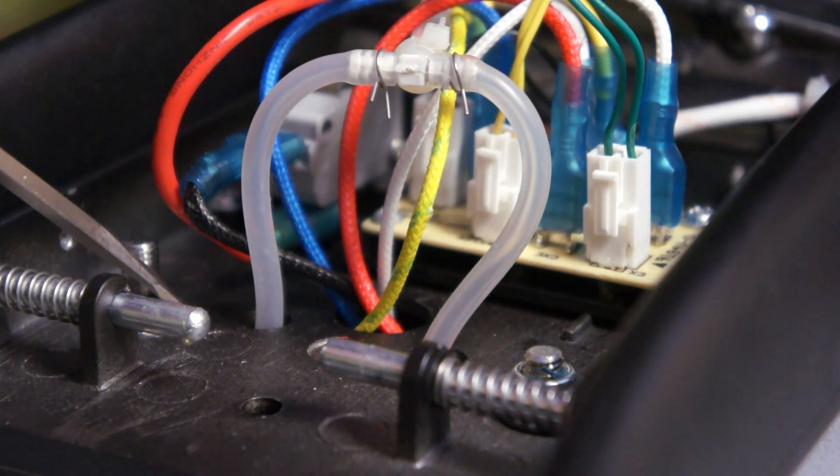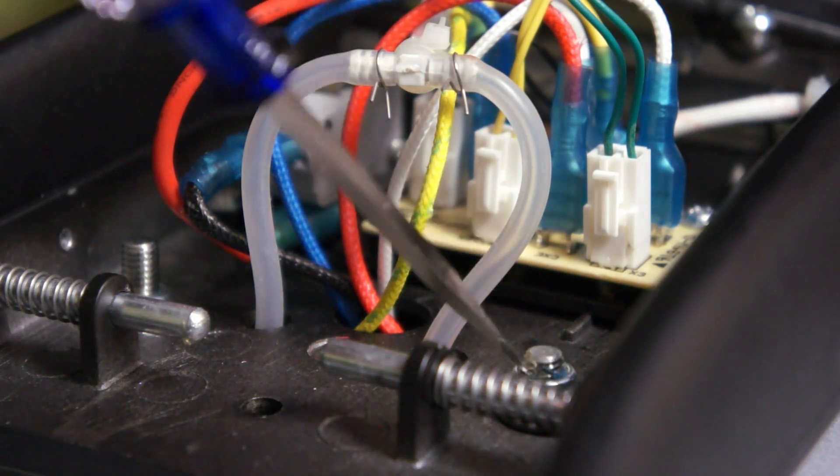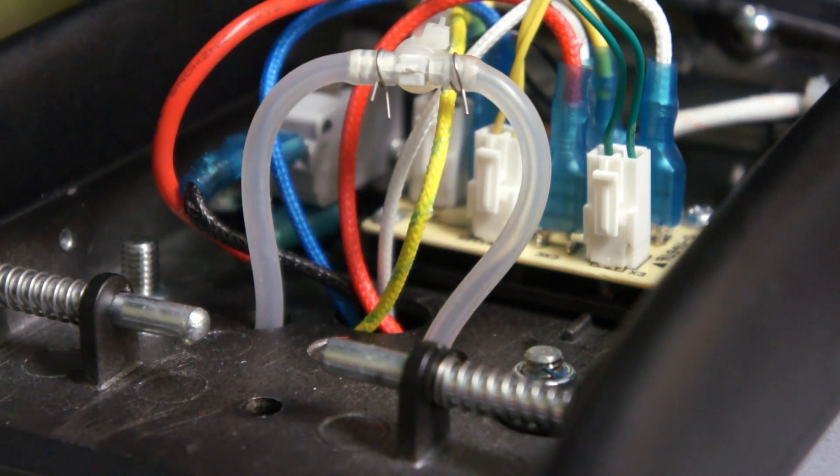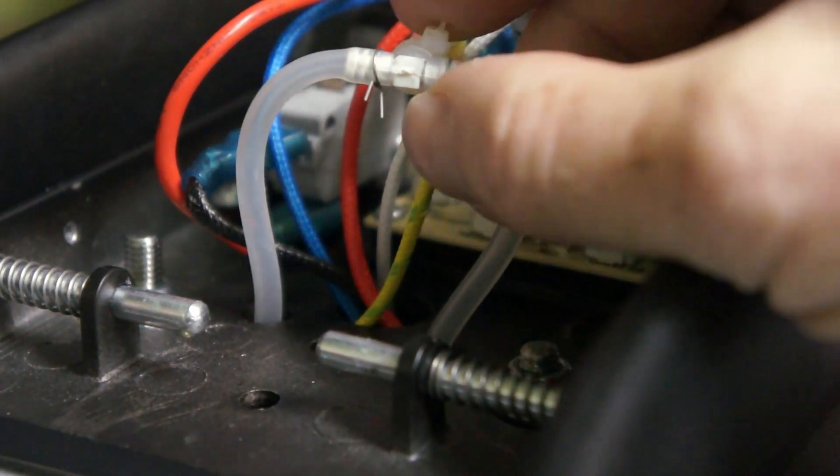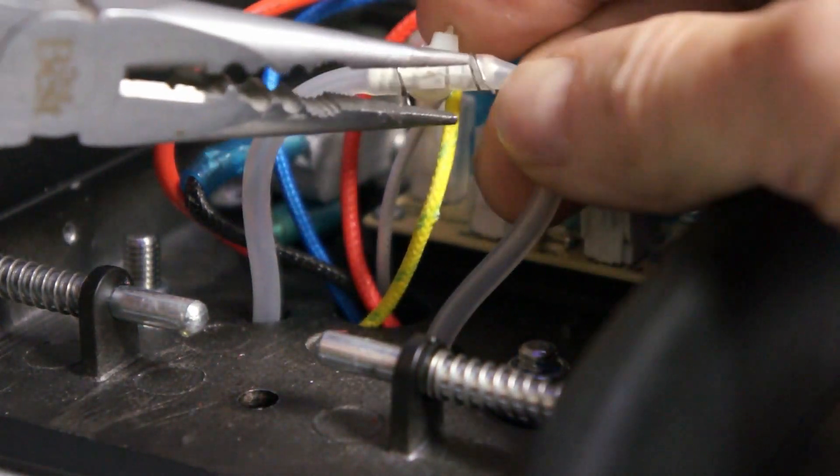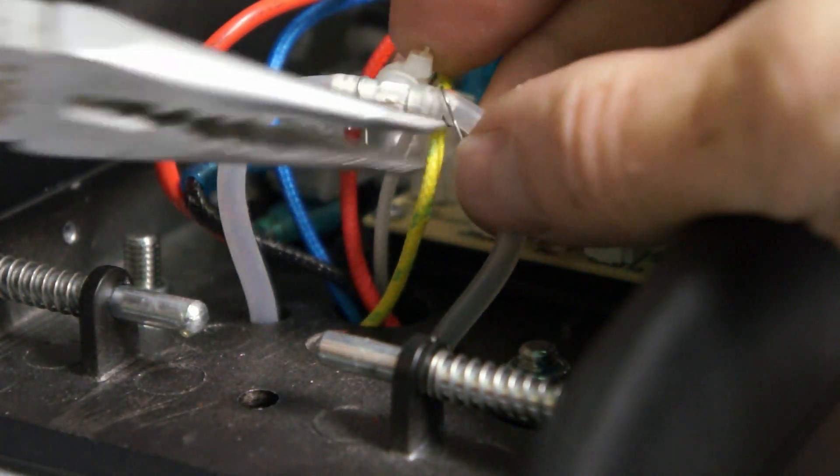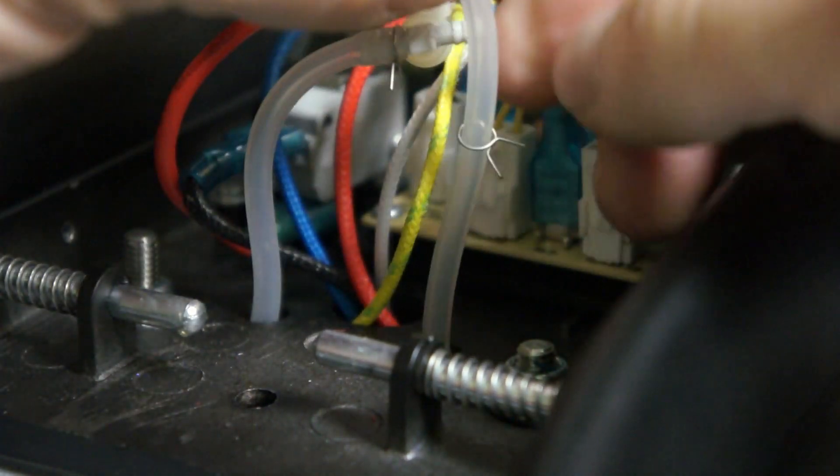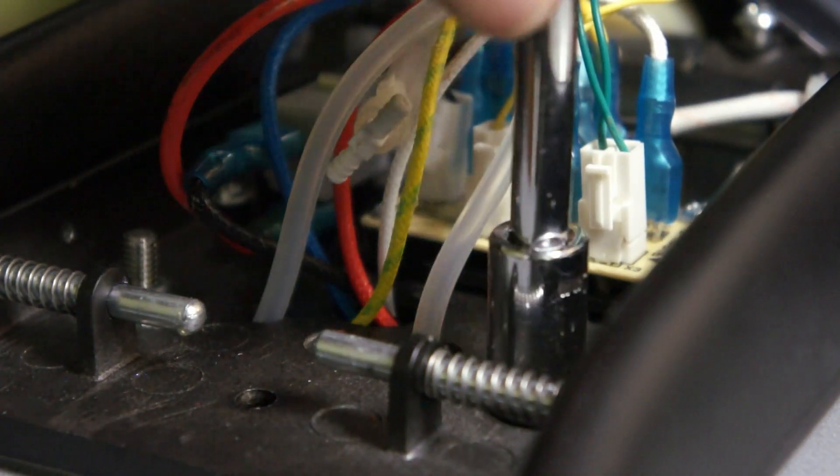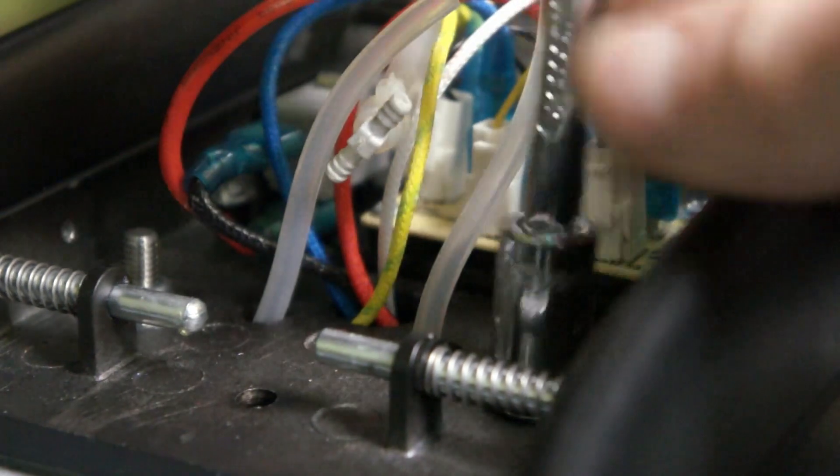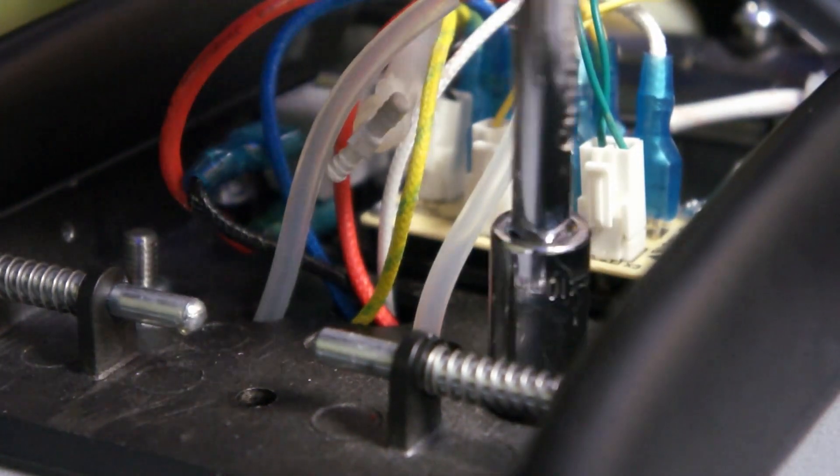There's two large nuts and bolts that hold the steam iron together. We're going to have to take those off. But first let's take off these hoses. This is where the water comes in for the steam. Let's take these nuts off and this will release the top part of the steam iron.